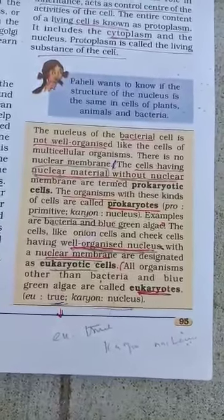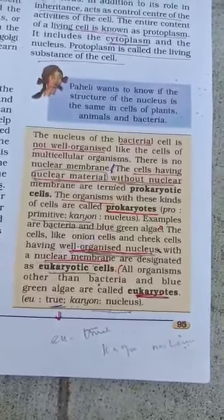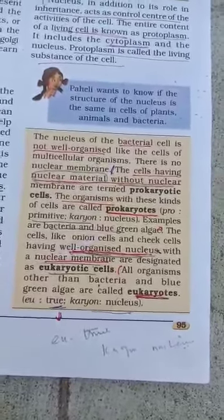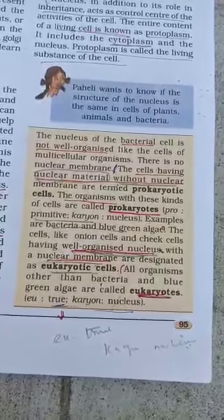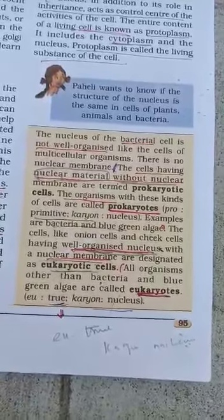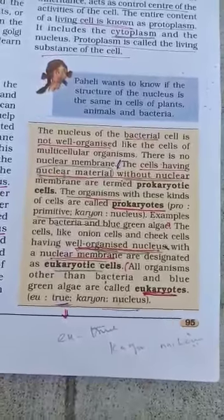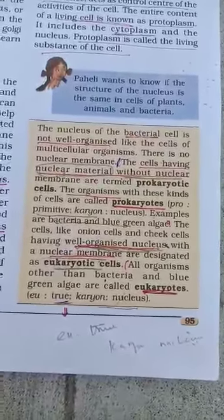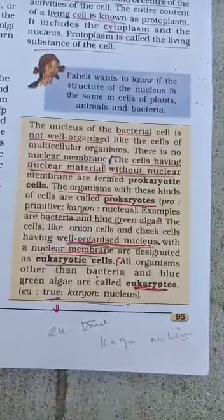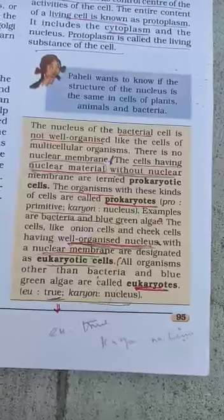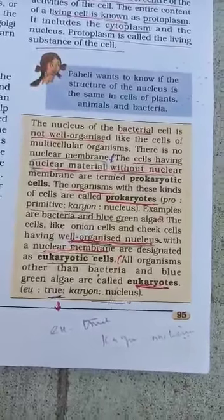A single-cell organism is an organism made up of a single cell. Multicellular means the organism is made up of many cells — those are called multicellular organisms.